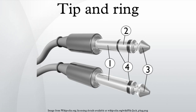When inserted into a jack, the plug's tip conductor connects first, followed by the ring conductor. In many European countries tip and ring are referred to as the A and B wires.